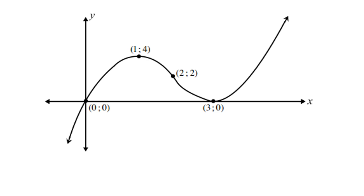Now we can sketch the graph. Start by plotting the x-intercepts at x = 0 and x = 3. Then plot the local maximum at (1, 4) and the local minimum at (3, 0). The y-intercept is also the origin. Complete your drawing and the graph is done.